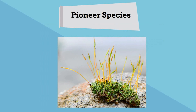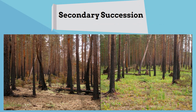Secondary succession occurs when an existing ecosystem has been destroyed or disturbed, for example after a forest fire. In this before and after picture, the fire destroys the plants but the soil remains. Two years later the forest has grown back but it is a little different.